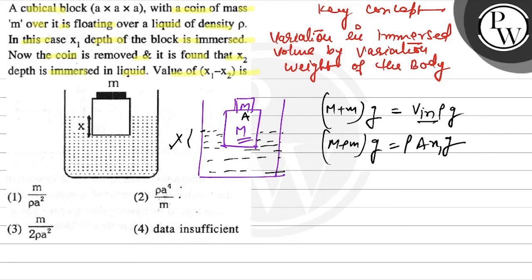After removing the coin, capital M g equals ρ into a into x2 into g. Subtracting the second equation from the first: small m g equals ρ into a into x1 into g minus ρ into a into g into x2.